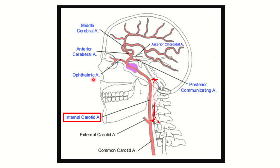After rising into the cranial cavity, the internal carotid artery gives off the ophthalmic artery, anterior cerebral artery, middle cerebral artery, anterior choroidal artery, and posterior communicating artery. So the internal carotid artery provides five branches, but all of these are within the cranial cavity.